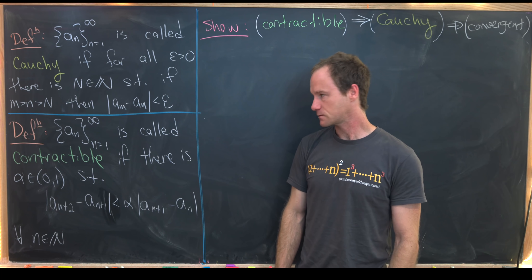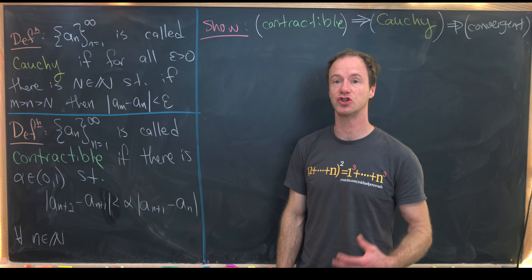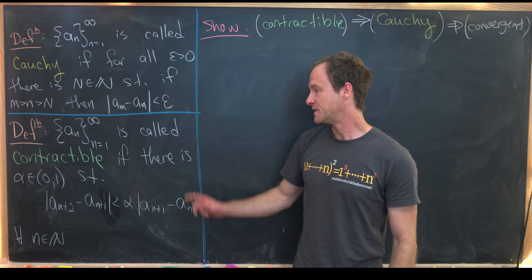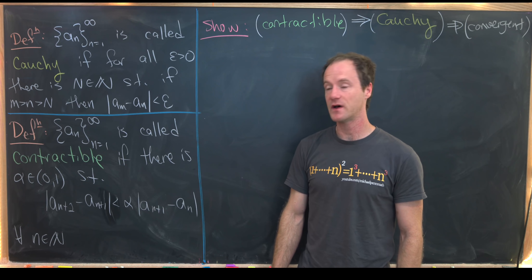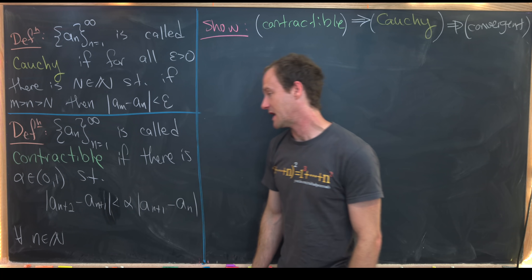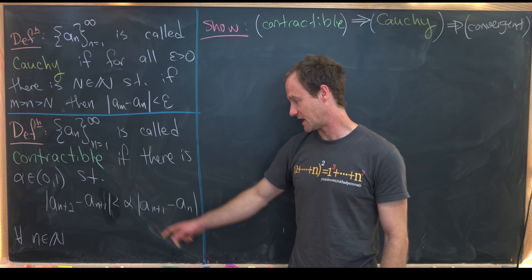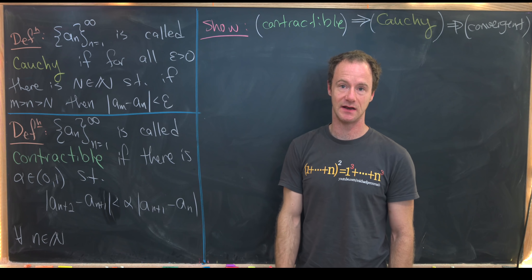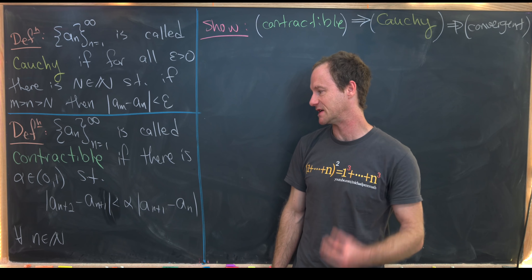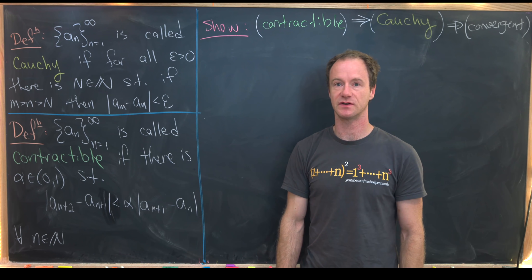I'm going to introduce another notion: a contractible sequence. A sequence is called contractible if there exists an alpha between zero and one such that |a_{n+2} - a_{n+1}| is less than alpha times |a_{n+1} - a_n|. In other words, the difference between consecutive terms is contracting over time, and this inequality must hold for all natural numbers n.